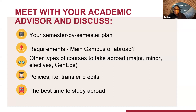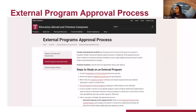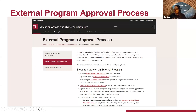You'll also want to be aware of any policies around transfer credits. If you're doing an external or exchange program, your credits come in as transfer credits, which usually doesn't make a difference unless your program has a limit on how many credits you can transfer in. I also recommend looking at the external program approval process on our website under the Programs tab — it has step-by-step information from beginning to end on how to apply for an external program, starting with Foundations. Refer to this page if you're unsure what to do next.